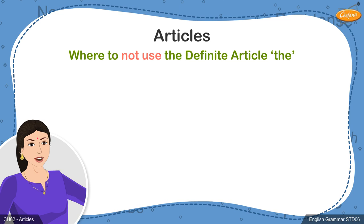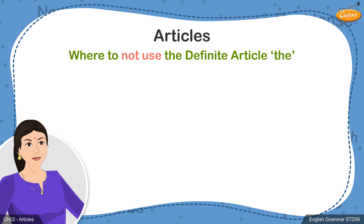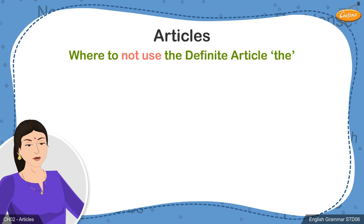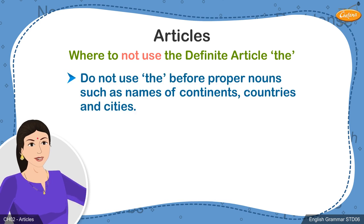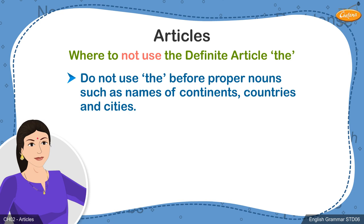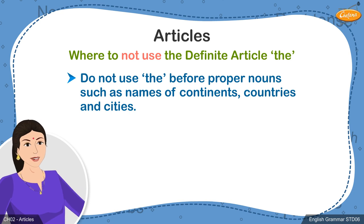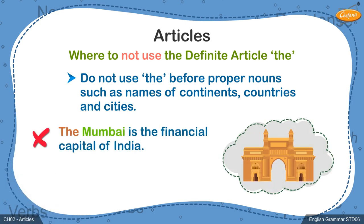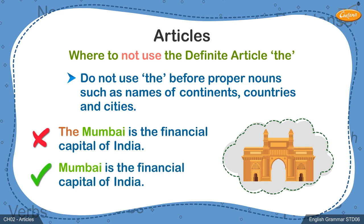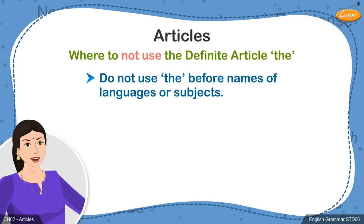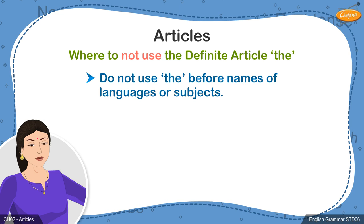We have now looked at how the definite article can be used in sentences. But we also need to learn about where the article the should not be used. Firstly, the article must not be used before certain proper nouns. Proper nouns are names given to people, places, and objects, and the definite article should not be used before these. We never say: The Mumbai is the financial capital of India. But: Mumbai is the financial capital of India. Similarly, while referring to names of languages or subjects, the article the is not used. We never say: The maths is a difficult subject, or The Hindi is the national language of our country.